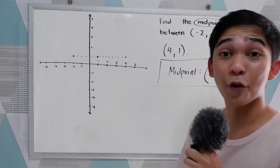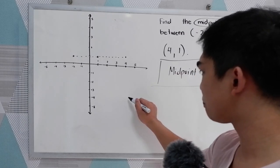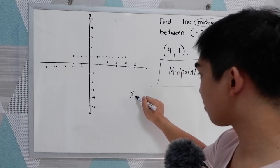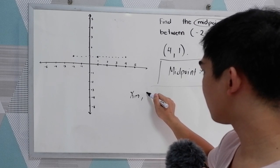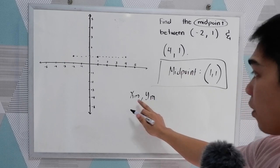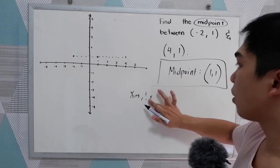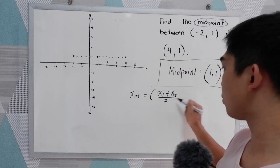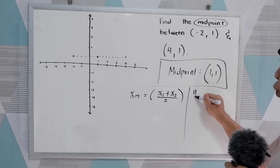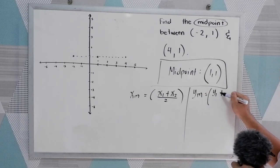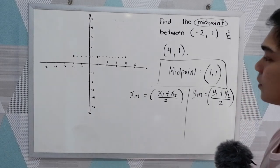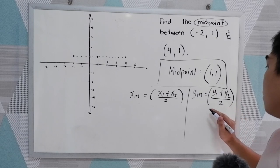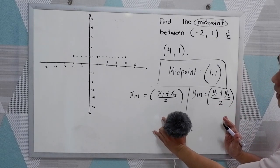From that, we can derive our formula for midpoint. So we have the midpoint formula for x — x sub m — and y sub m, or the midpoint of y. The midpoint of x would be x sub 1 plus x sub 2, divided by 2. And for our y midpoint, we have y sub 1 plus y sub 2, all over 2.